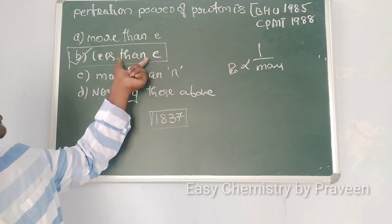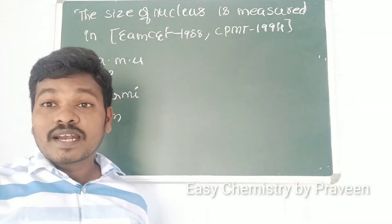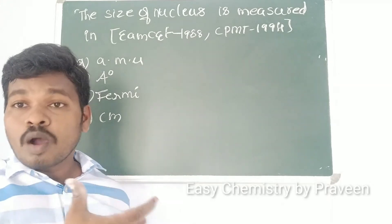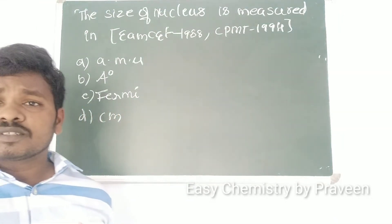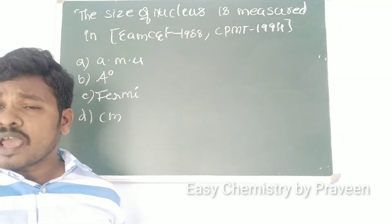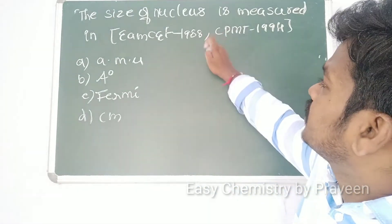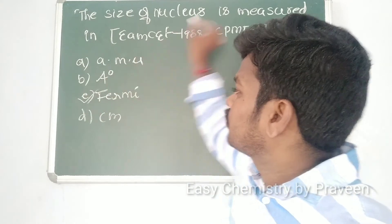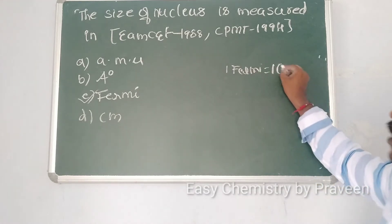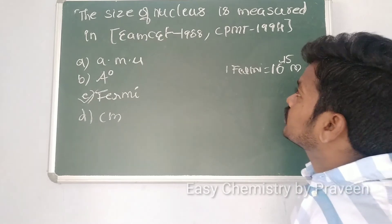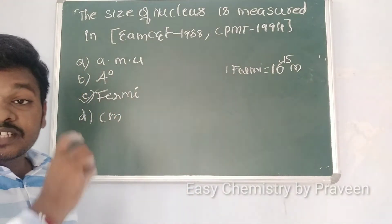This question was asked in MZ 1988 and CPMT 1994: the size of the nucleus is measured in — AMU, angstrom, fermi, or centimeter? The size of the nucleus is measured in fermi only. One fermi is equal to 10^-15 meters.